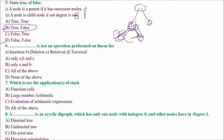Next: which operation is not performed on a linear list? We have taken a similar question on queue, where the answer was traversal. But in the case of a linear list, all the operations are possible, so the answer would be none of the above. We take D as the answer.